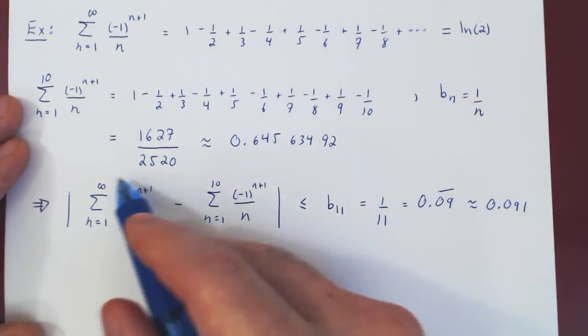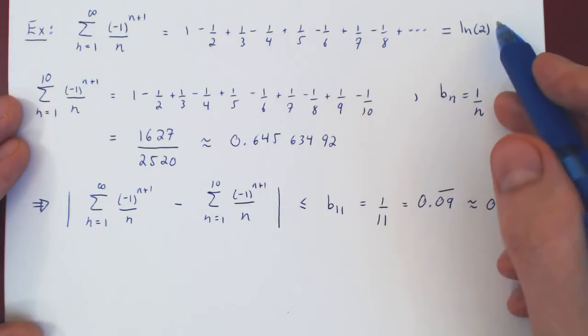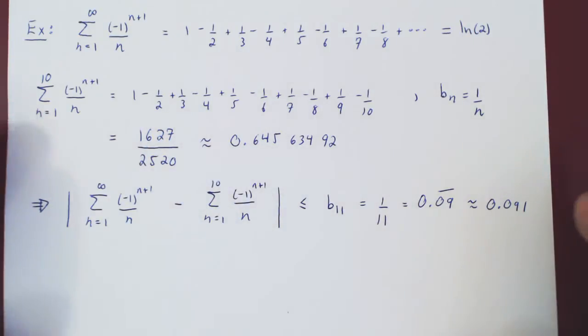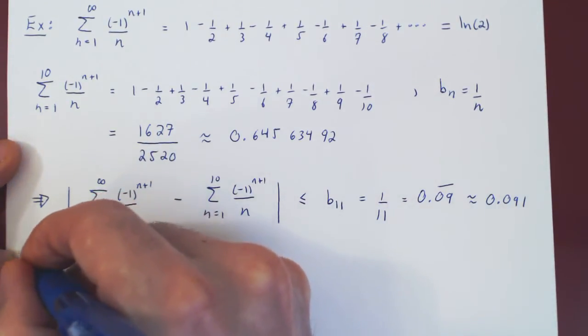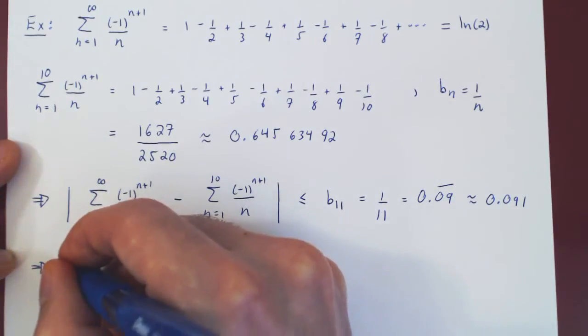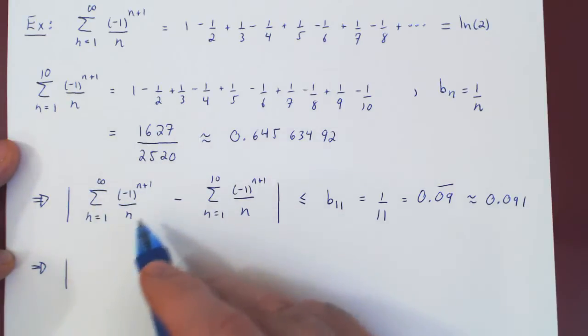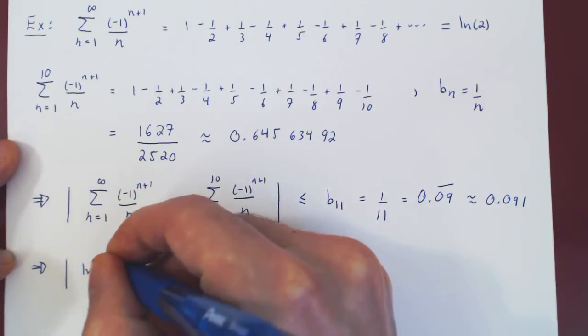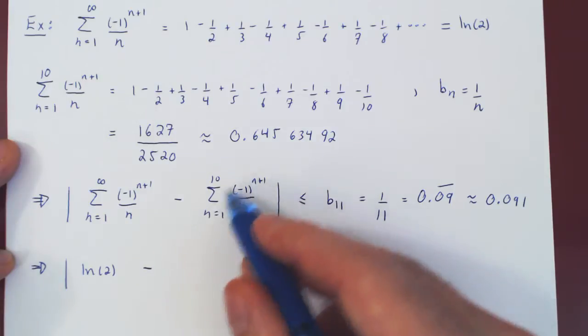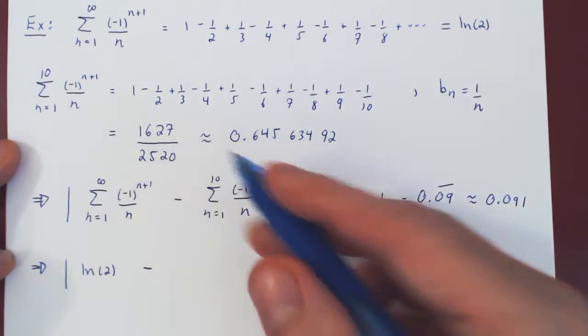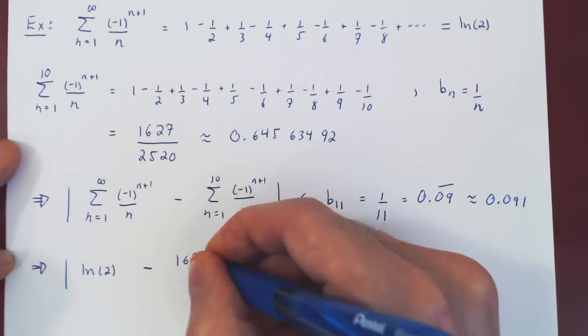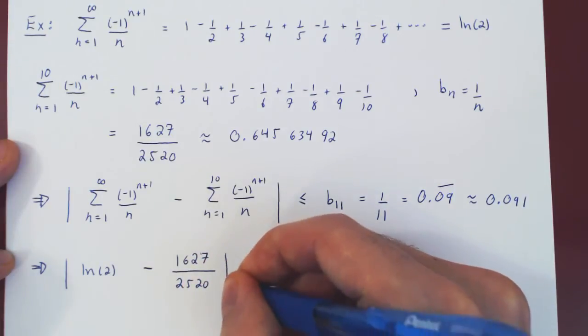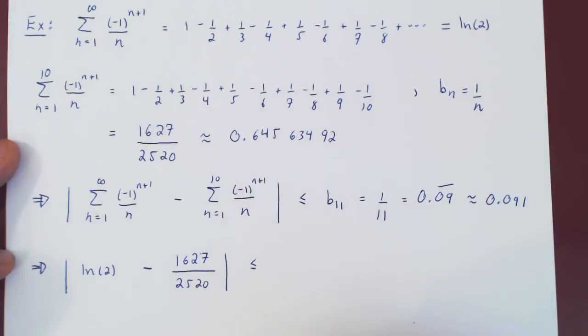And now, let's replace the infinite series by its exact value of ln of 2, and the truncated sum by its exact value as a rational number. And we have a very interesting statement at this point. So we have that in absolute value, the difference between the exact value of the infinite series, which is ln of 2, and the exact value of the truncated series, therefore the approximation as a rational number, 1627 over 2520, the difference is at most 1 over 11.